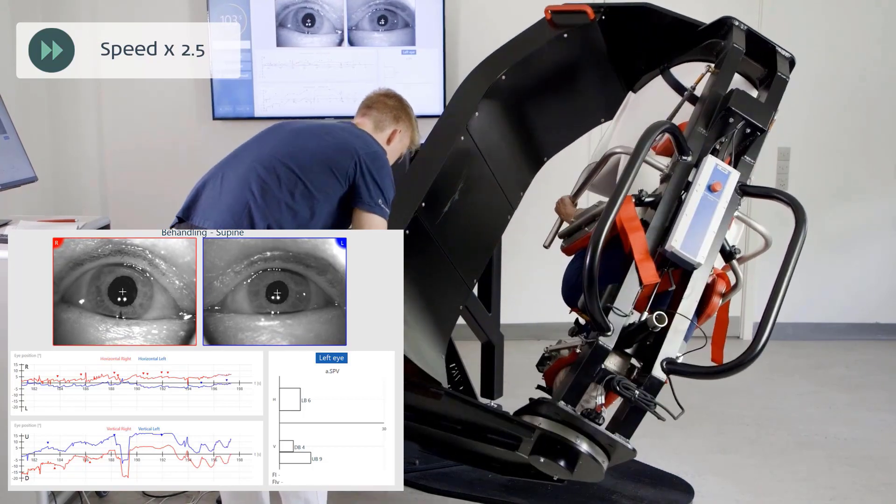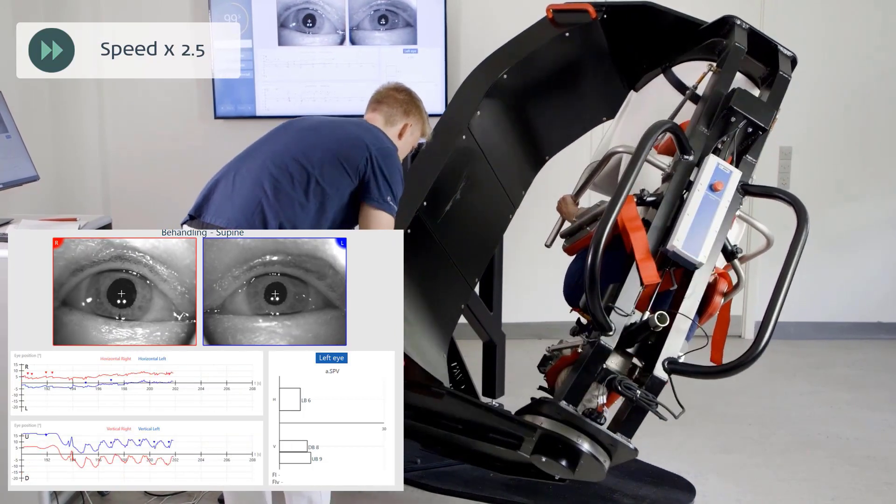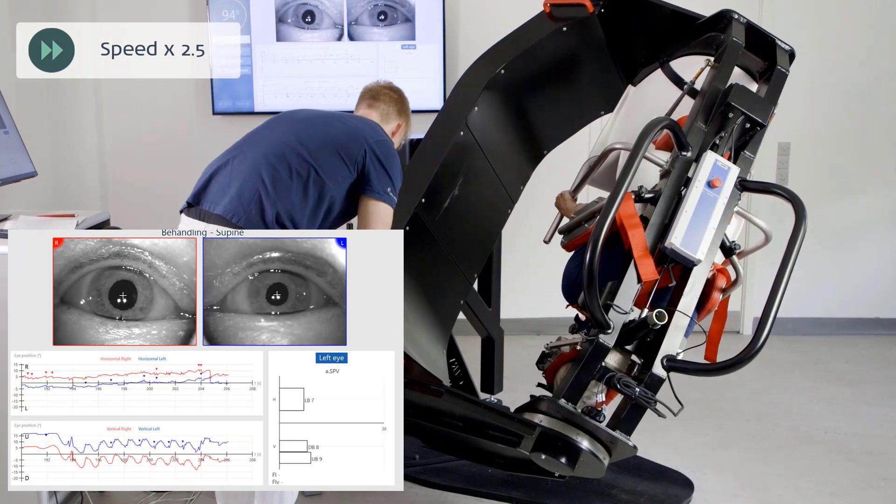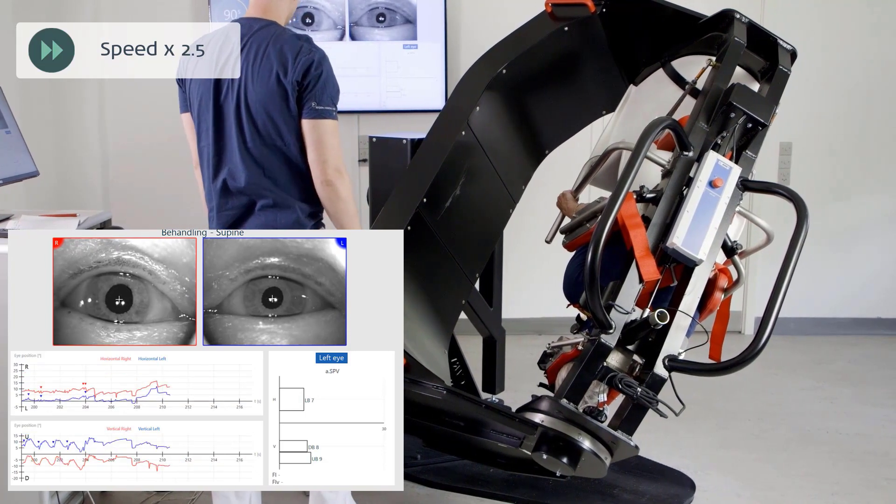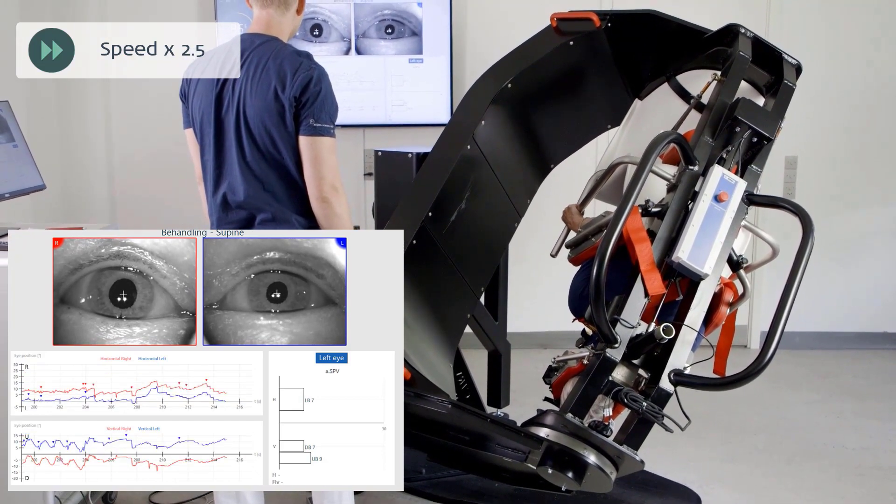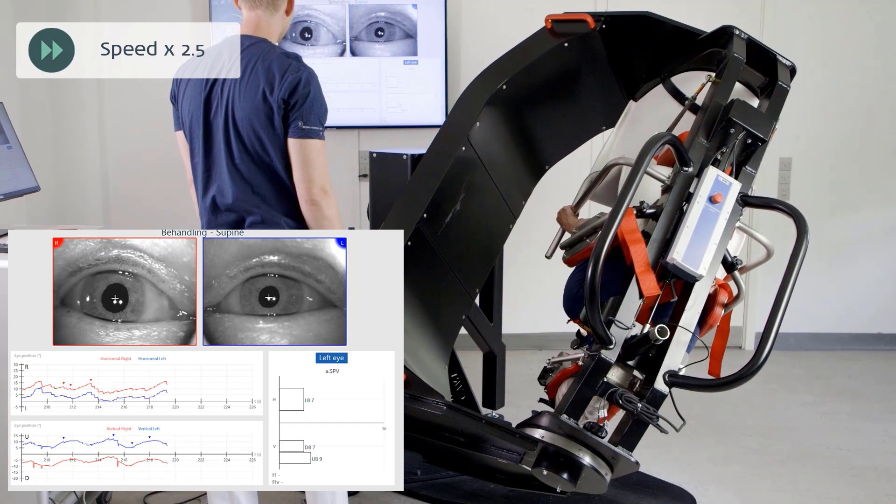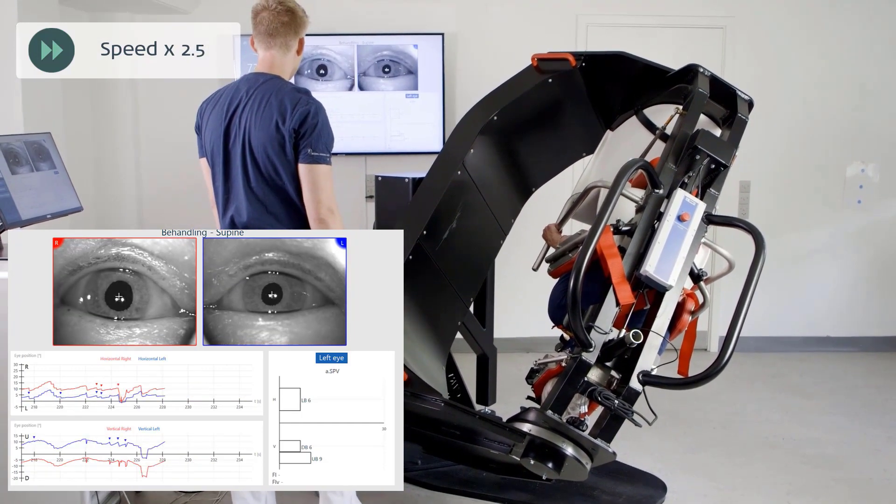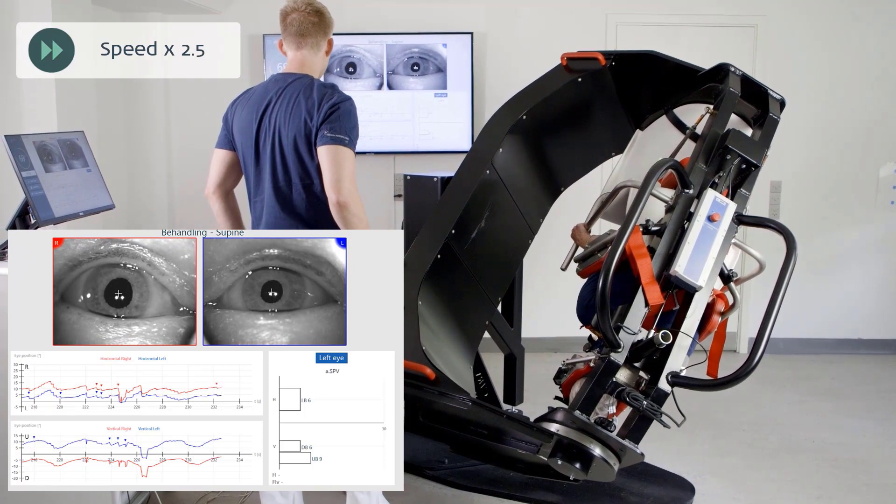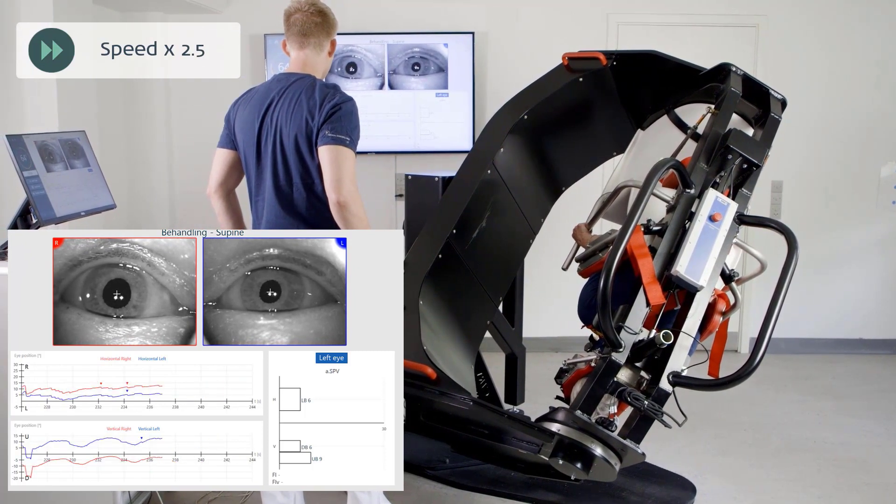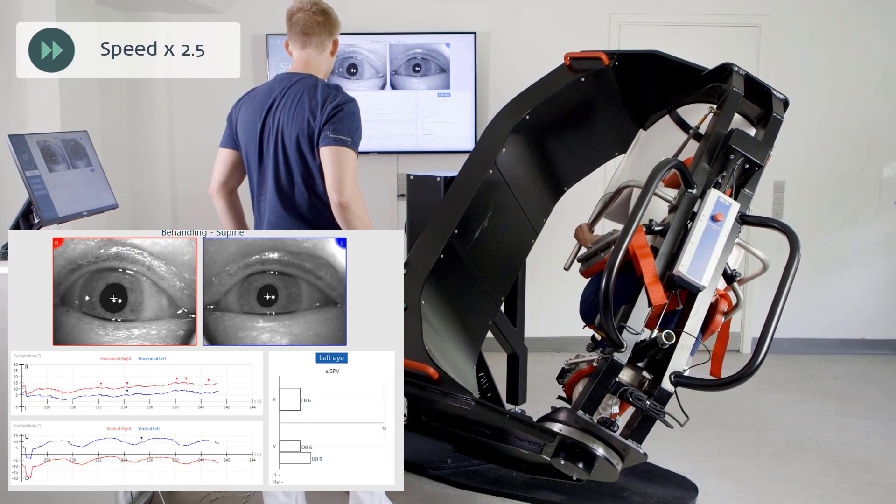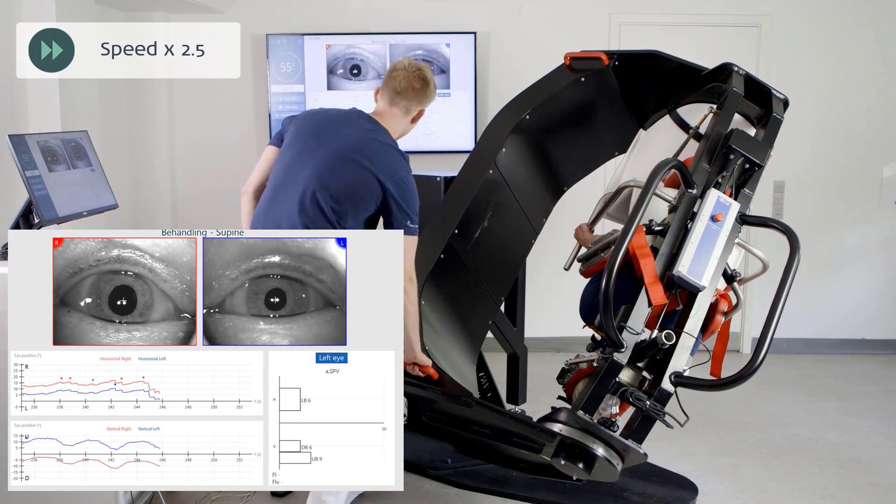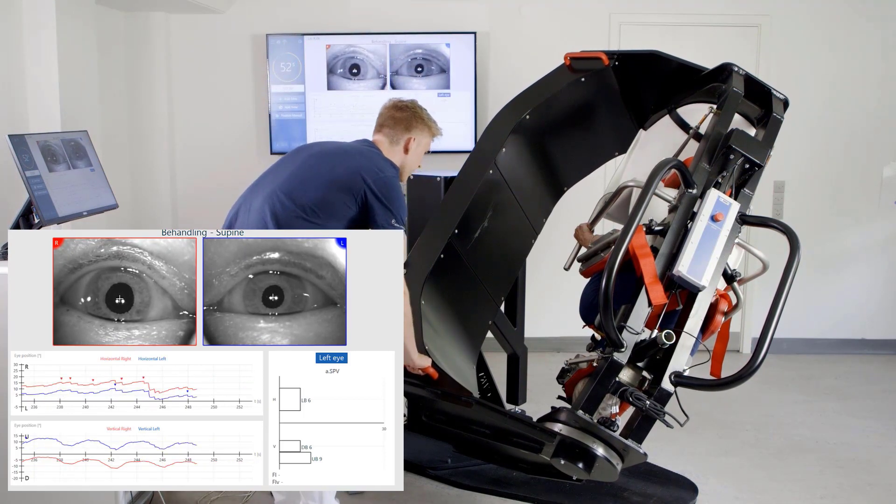Treatment of posterior canal BPPV with a potentiated Epley maneuver is one out of several repositional maneuvers available with the TRV chair. Other posterior BPPV treatment options with the TRV chair include a standard Epley maneuver, the Semont maneuver with or without kinetic impulses applied, as well as a 360 degree liberation maneuver.